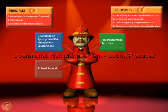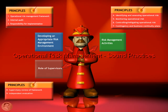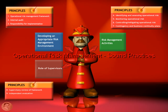The third area covers the role of supervisors, focusing on what the banking supervisor should do to check if the bank is following sound practices. Principle number eight states that the banking supervisor should make sure that all banks have an effective framework to identify, assess, monitor, control, and/or mitigate all material operational risks. Principle number nine states that supervisors should conduct regular independent evaluation of the bank's policies, procedures, and practices related to operational risks.